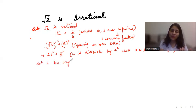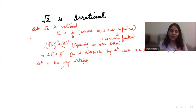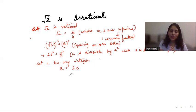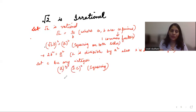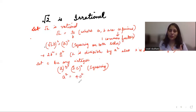Now let c be any integer. I can write a = 2c. Squaring on both sides gives a² = 4c².